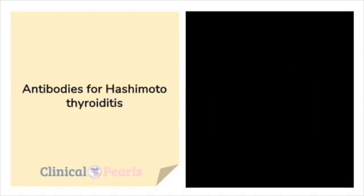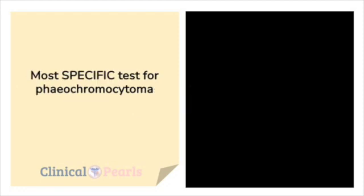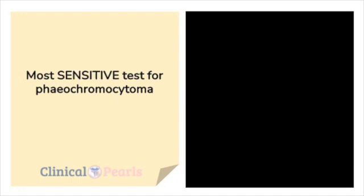Antibodies for Hashimoto thyroiditis: anti-microsomal antibodies and anti-TPO antibodies. Most specific test for pheochromocytoma: urine catecholamines. Most sensitive test for pheochromocytoma: plasma metanephrines.